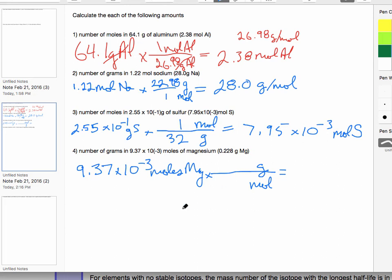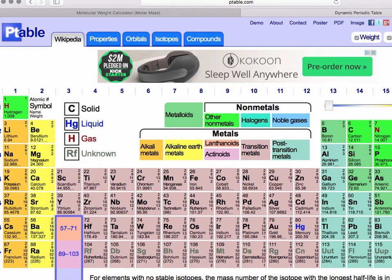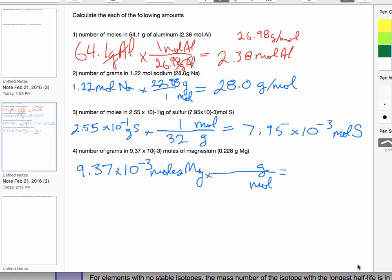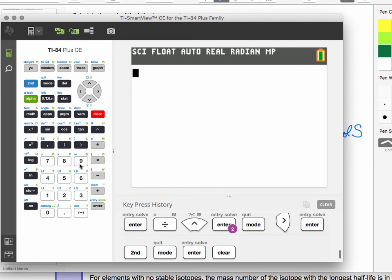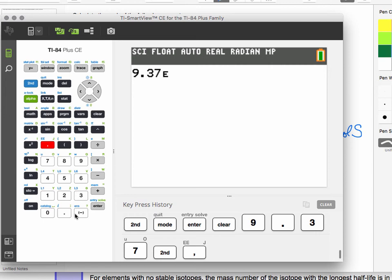And we're going to do the same thing, getting the values from our calculator. And this, by the way, was 32 grams per mole here. So we're going to look up the value for magnesium. The answer should be 0.228, and again, we'll write that in scientific notation. So let's find magnesium, and actually we'll start with our value again, 9.37 × 10^-3. So I'm going to type 9.37, second function, double E, minus 3, enter.